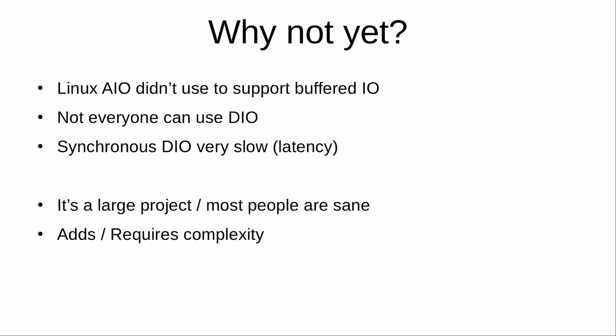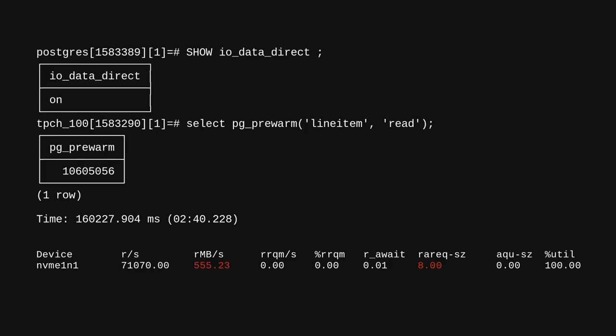So if it's all that great to have support for asynchronous IO with buffered IO, why don't we have that? One big reason is that Linux's asynchronous IO didn't used to support actually doing buffered IO asynchronously. And there are a lot of workloads where using direct IO is not really an option — for example, because you don't have enough knowledge about the specific workload to set up shared buffers large enough. Here is a short example of how bad that can be.